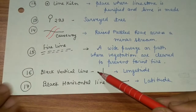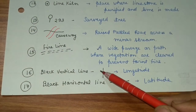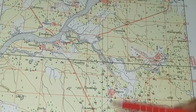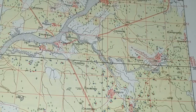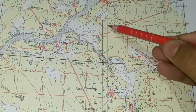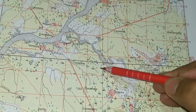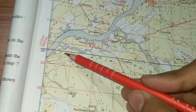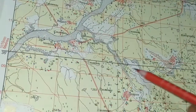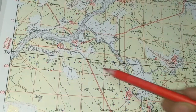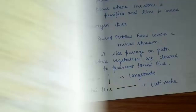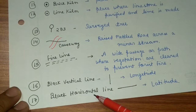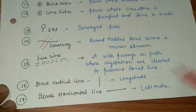If you see black vertical lines on the map, these represent longitudes. The black horizontal lines represent latitudes. So: black vertical line equals longitude, and black horizontal line equals latitude.